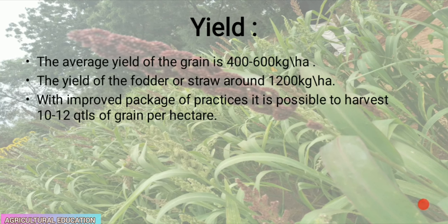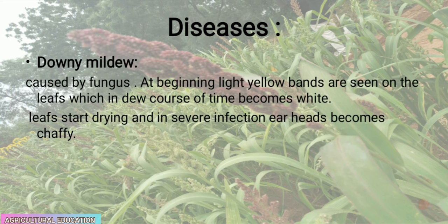The average yield of grain is 400 to 600 kg per hectare, and the yield of fodder or straw is around 1200 kg per hectare. With improved package of practices, it is possible to harvest 10 to 12 quintals of grain per hectare. The diseases of barnyard millet include downy mildew, caused by a fungus, where light yellow bands appear on leaves, which later become white; leaves start drying and in severe infection ear heads become chaffy.